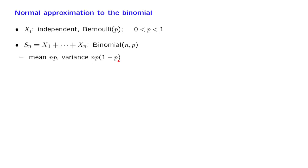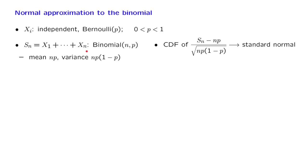We know its mean and variance. What the central limit theorem tells us, since we're dealing with the sum of independent identically distributed random variables, is the following: if we take the standardized version Zn — subtracting the mean of Sn and dividing by the standard deviation — this random variable has a CDF that approaches, as n goes to infinity, the CDF of a standard normal. So let us use this to calculate some probabilities.